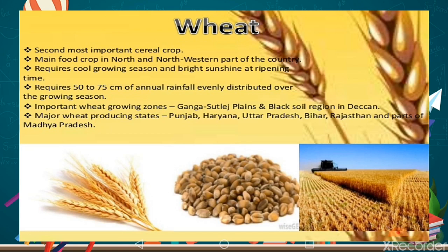Major wheat producing states include Punjab, Haryana, Uttar Pradesh, Bihar, Rajasthan, and some parts of Madhya Pradesh, which account for the majority of wheat production in India.